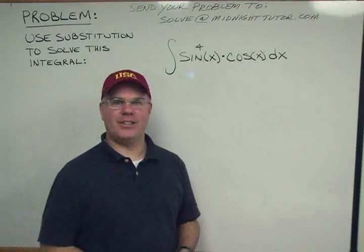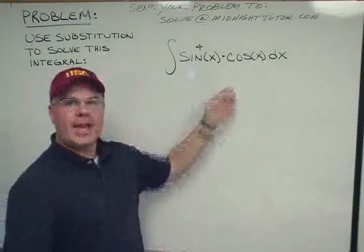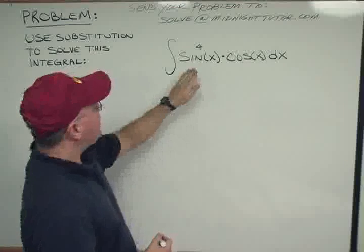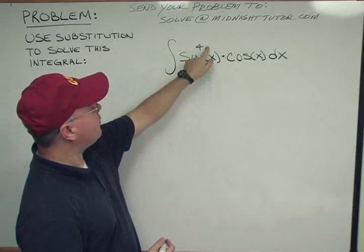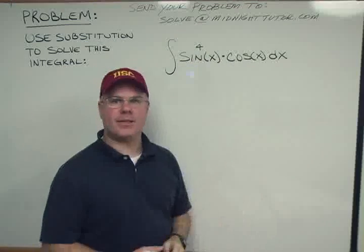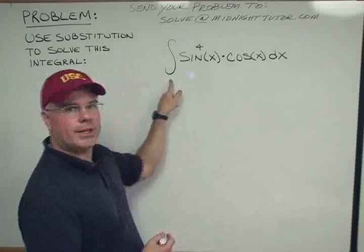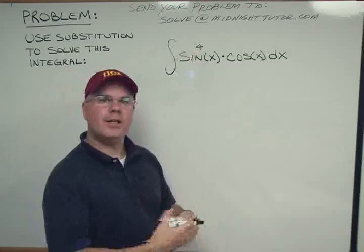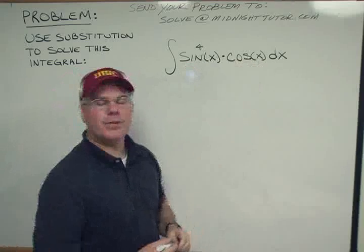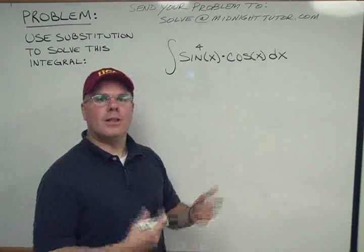Welcome back. We've got a new problem here, and this problem is an integral. It looks pretty intimidating at first blush. We've got sine x to the fourth times the cosine of x dx. We want to integrate this. This is an indefinite integral because we're not integrating from a to b — we're just finding the function that is the integral of this integrand.